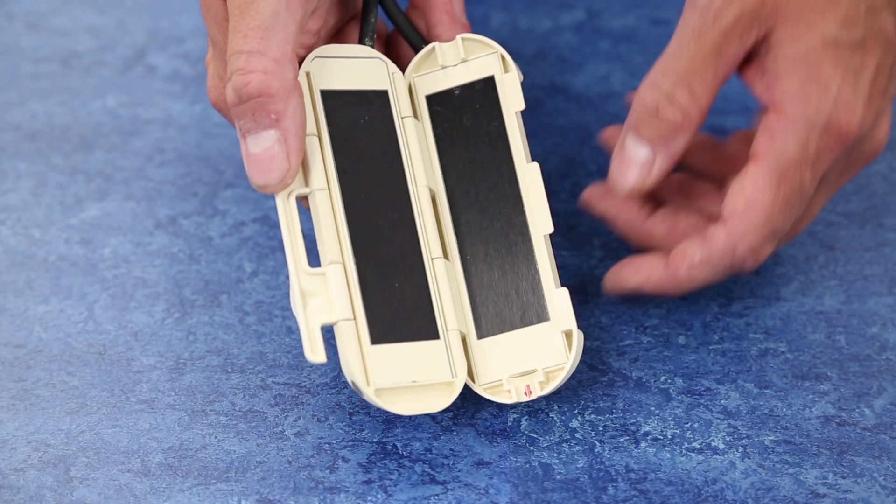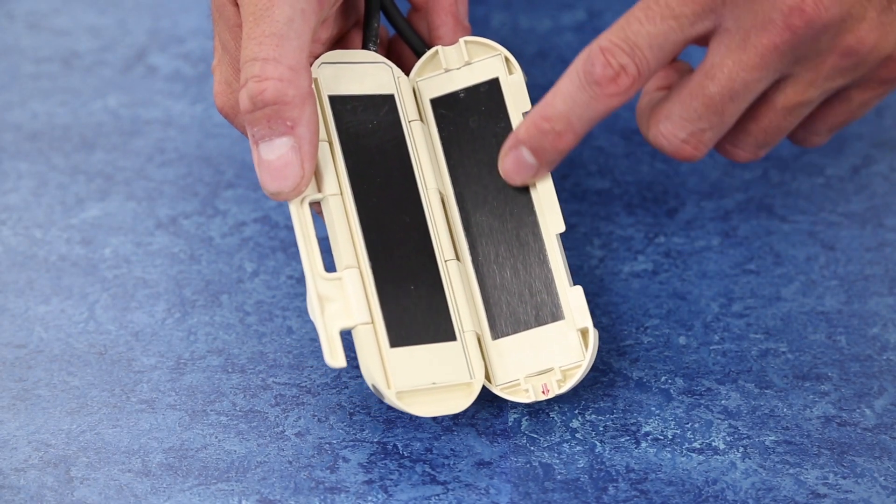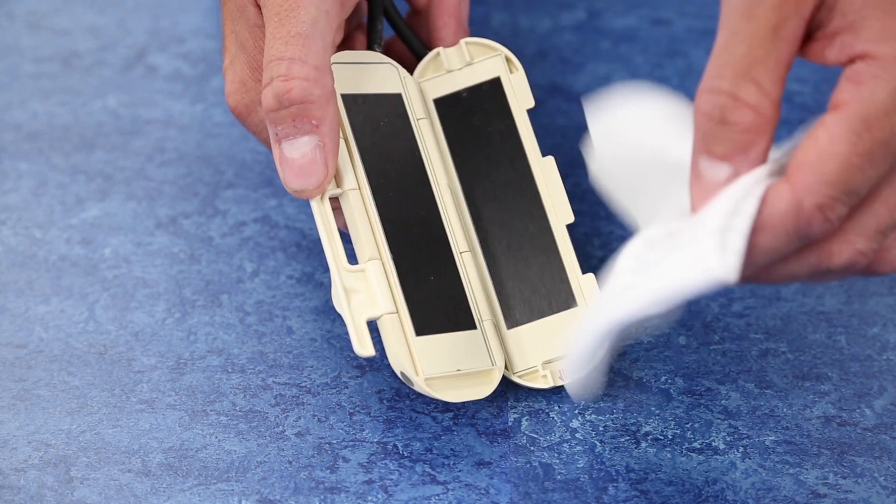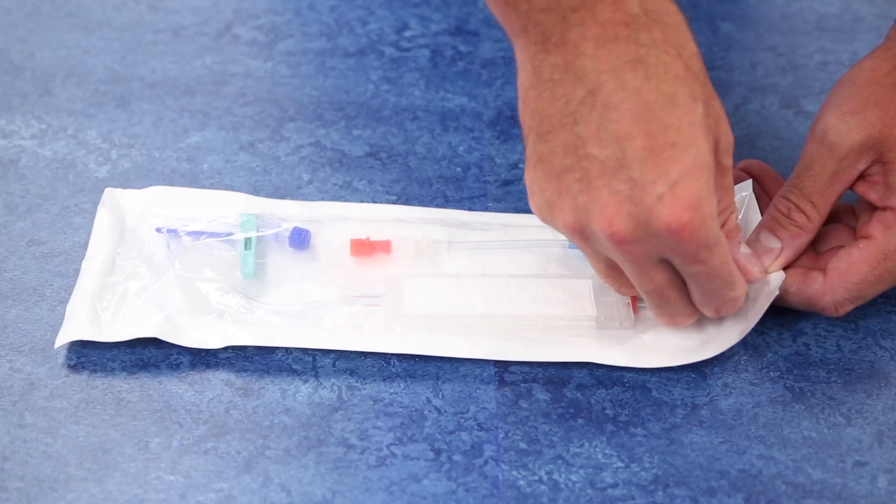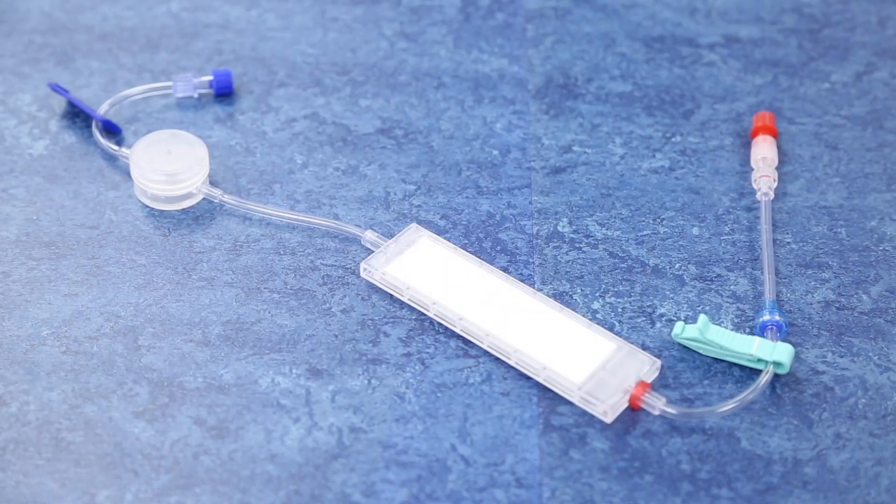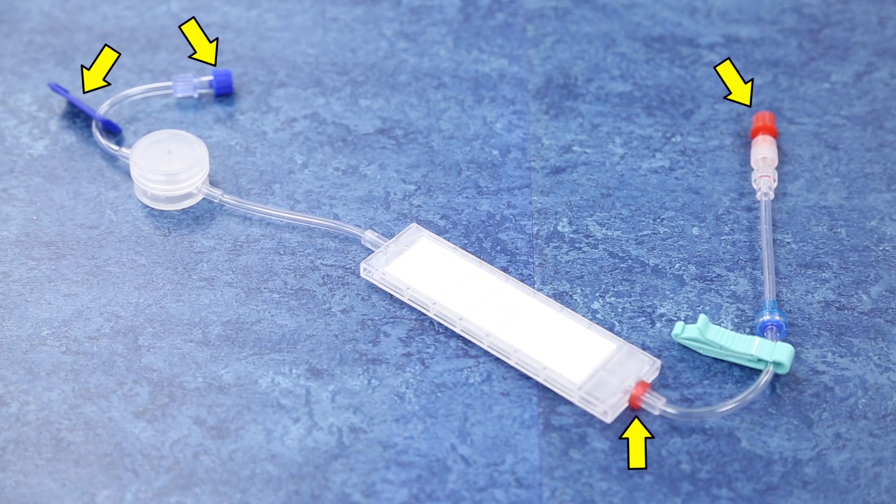Inspect the heater unit to ensure that the heater plates are clean and dry. Wipe off any particles or debris on the heater plates with a soft cloth. Carefully remove the disposable from its pouch. The disposable set is color-coded and keyed to ensure proper placement in the heater unit.